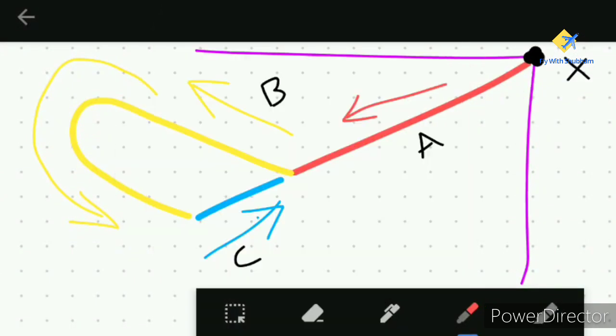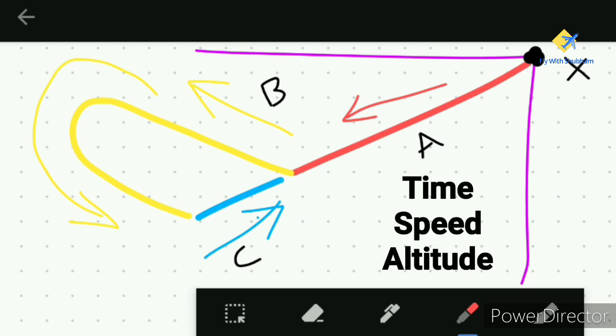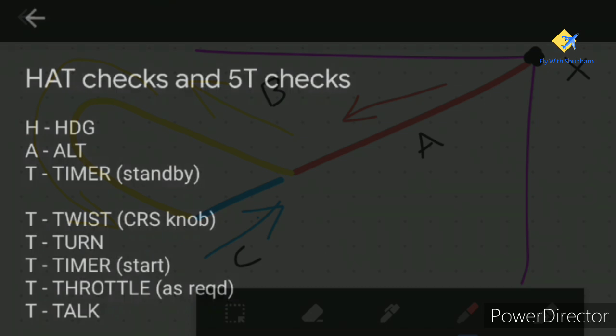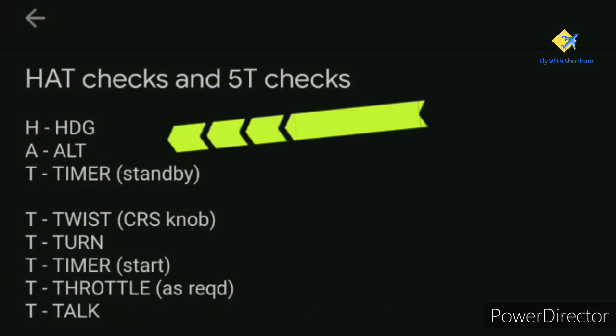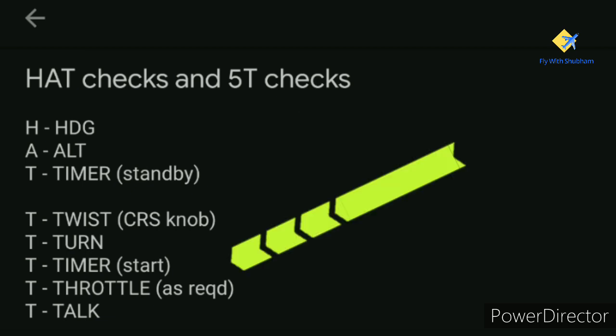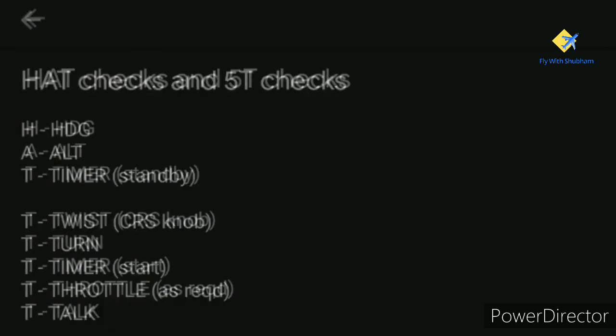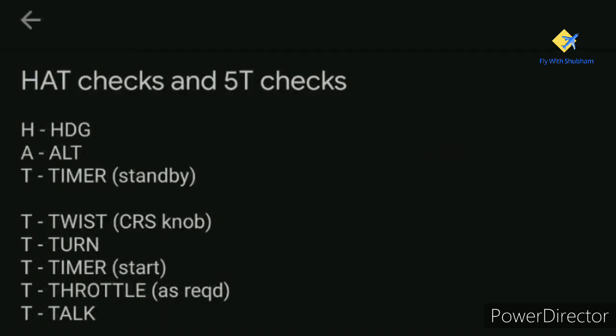This procedure seems straightforward, but it is governed by a lot of factors — most importantly time, speed, and altitude. There are some checks which you need to perform at certain points in this procedure. The first are the HAT checks and the 5T checks. It is important to know that every operator or flying school might have a different procedure according to their standard operating procedures.